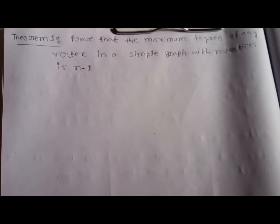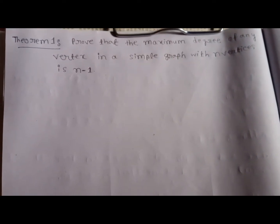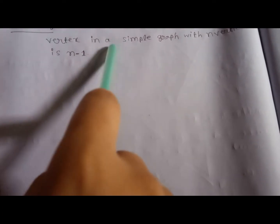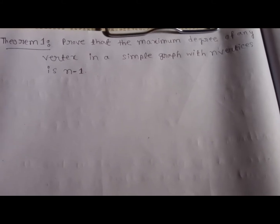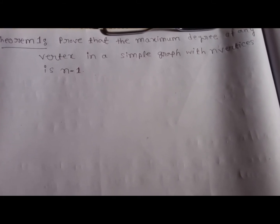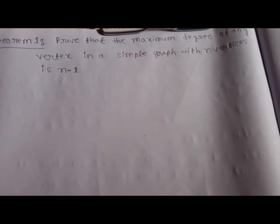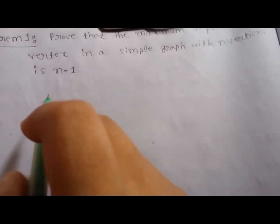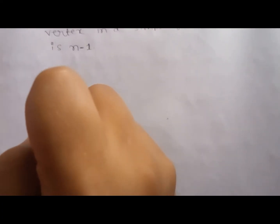Today I will start graph theory theorem one: prove that the maximum degree of any vertex in a simple graph with n vertices is n minus 1. Let's look at an example.